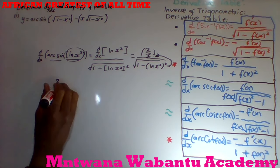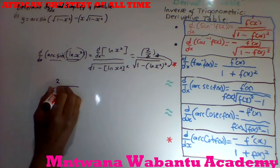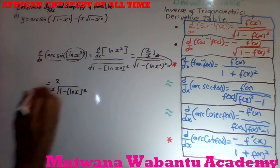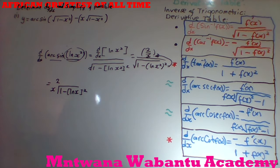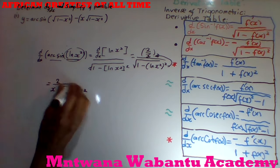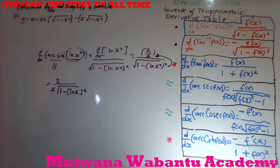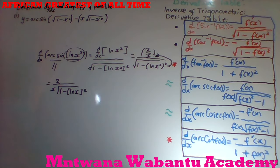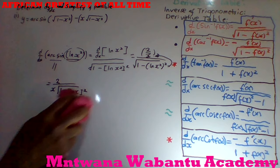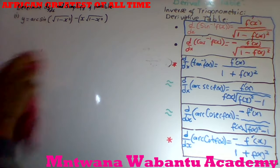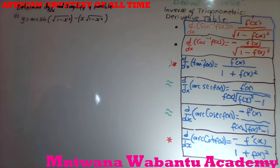So for that case, 2/x times the denominator goes to the bottom: 1 minus ln(x²) all squared — that's what we get when we differentiate the arcsin part. This table is very important because if you don't know this table you cannot solve any of these equations. Now let's go back to our main equation.